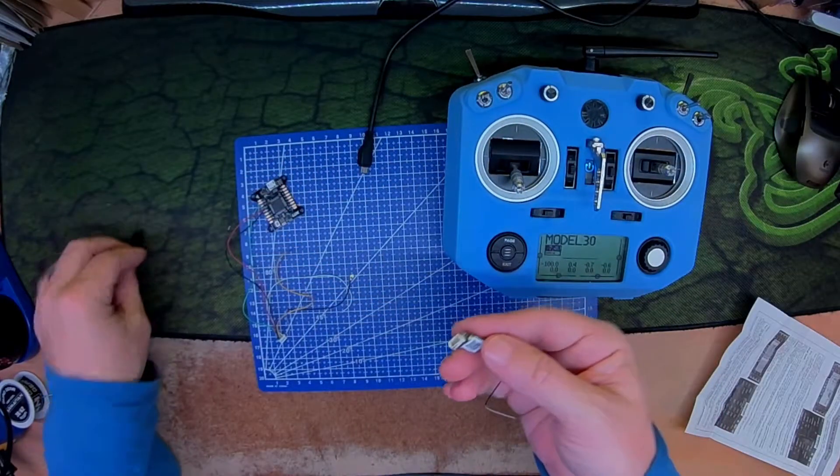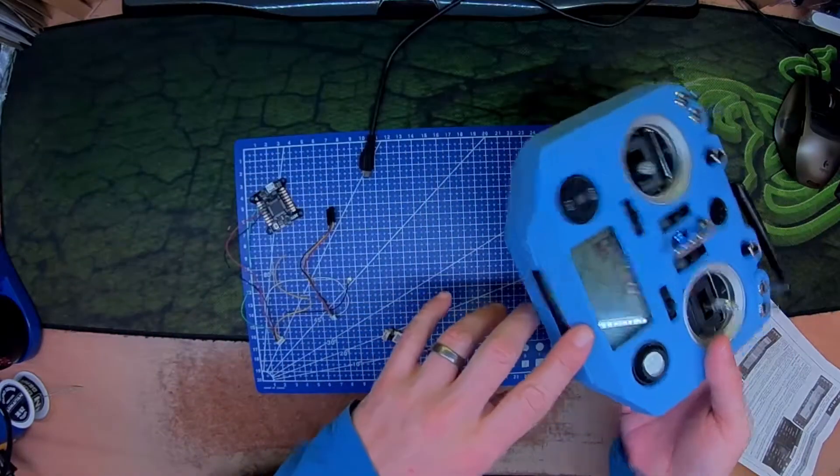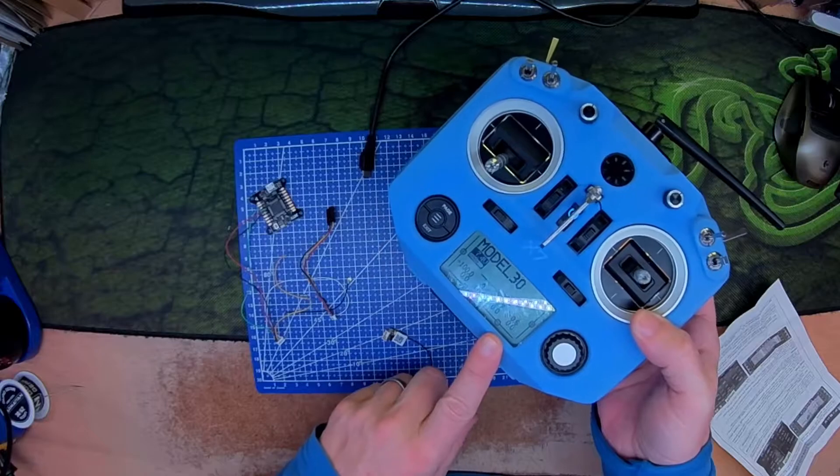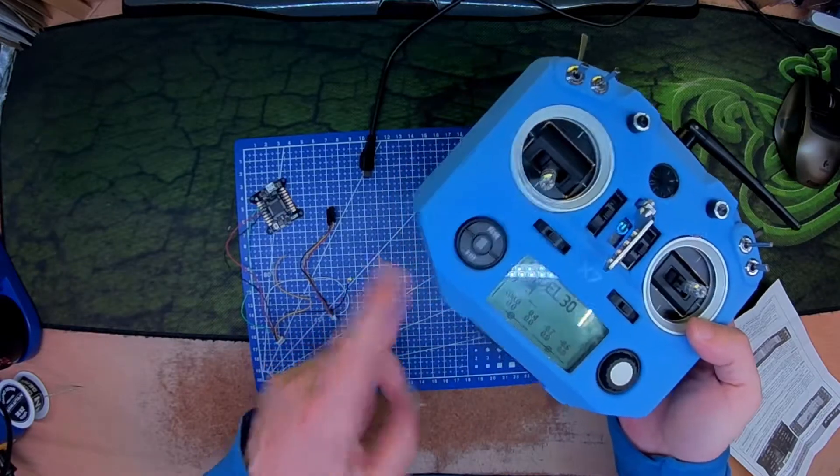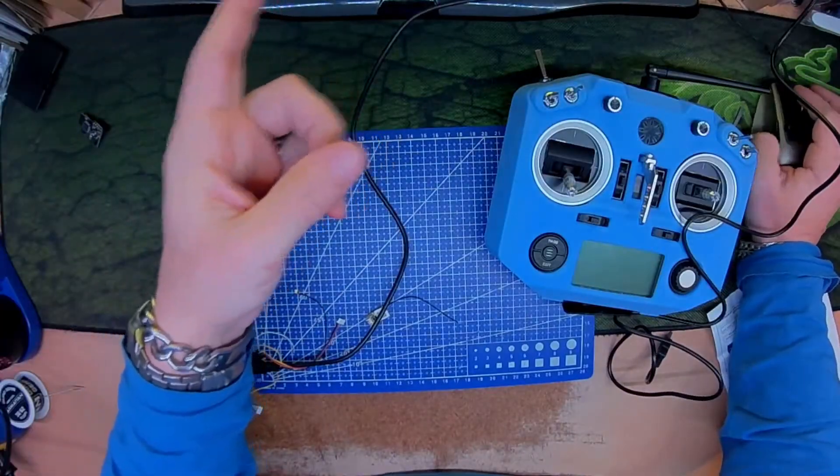Okay, obviously it didn't like the bind, so time to put the RXSR firmware on here, international, and then flash it to the receiver. Cue the desktop recording.